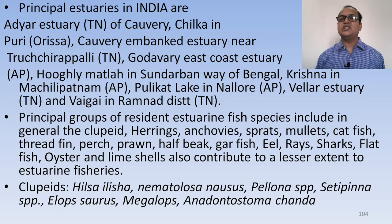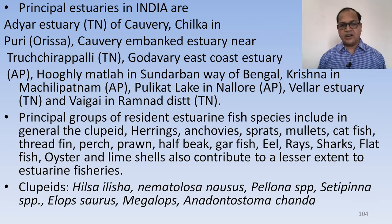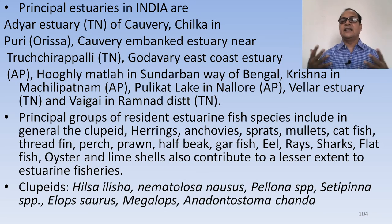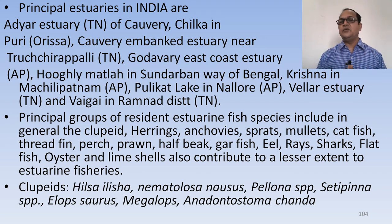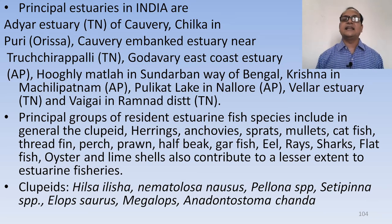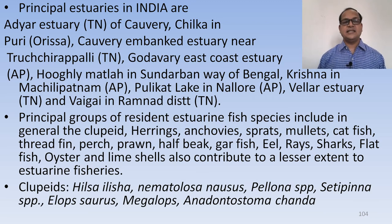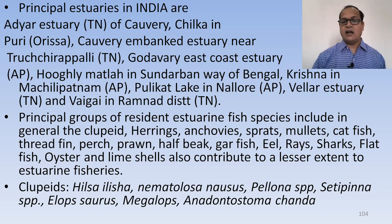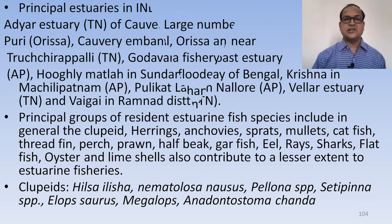The principal groups of resident estuarine fish species include: Clupeids, Herrings, Anchovies, Sprats, Mullets, Catfishes, Threadfin, Perch, Prawn, Halfbeak fish, Garfish, Eels, Rays, Shark, Flatfish, Oyster, and Lime Cells, which also contribute to estuarine fisheries. Clupeids include Hilsa ilisha, Nematalosa nasus, Pellona species, Coilia species, Alosa species, and Megalops — and Chanda are the principal clupeid fishes in estuaries.